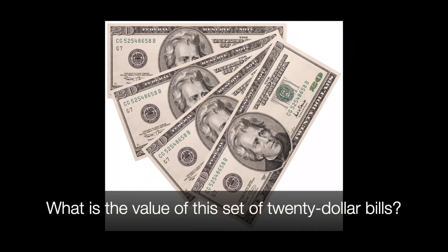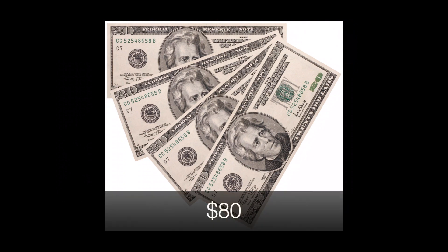Here we have a set of twenty dollar bills. There are four of them. So if we skip count by twenty, we can figure out how many there are. So twenty, forty, sixty, eighty. There's eighty dollars shown here.